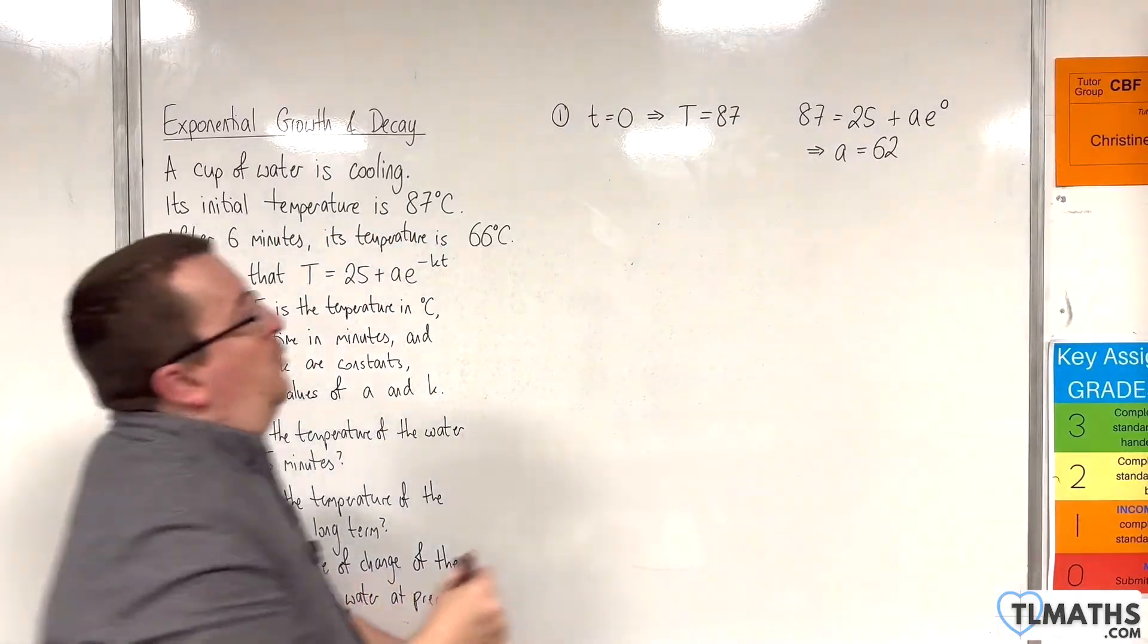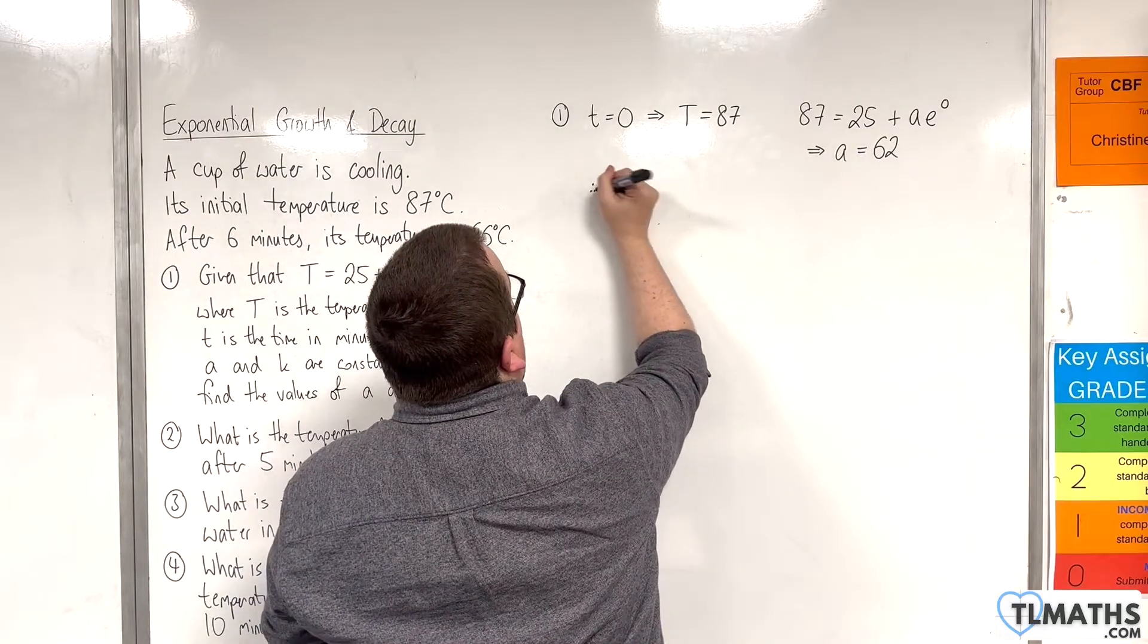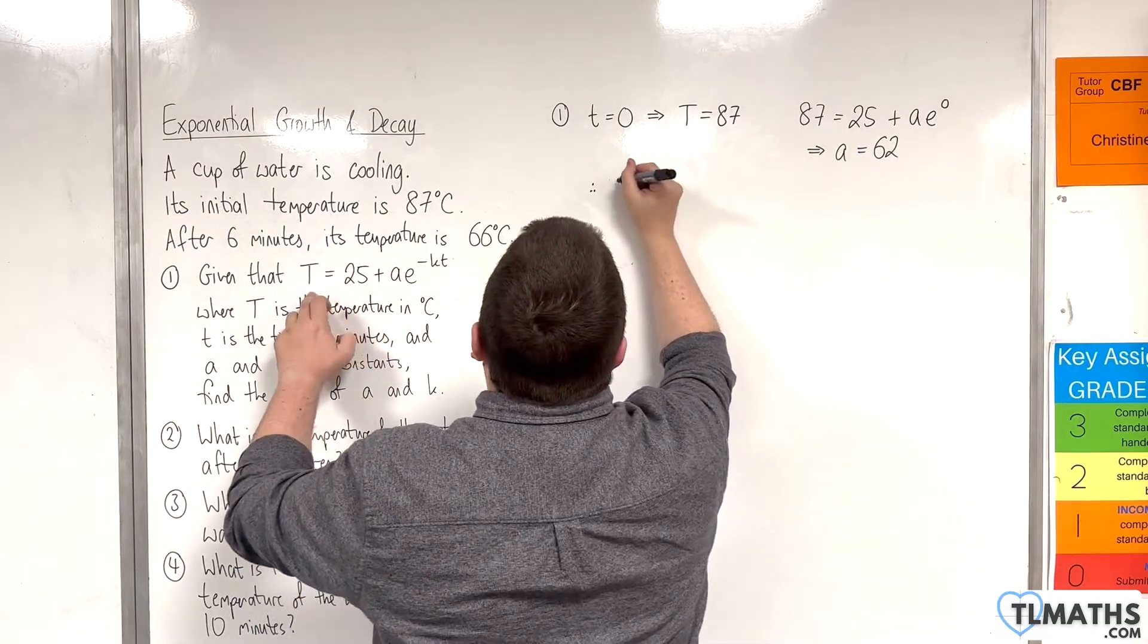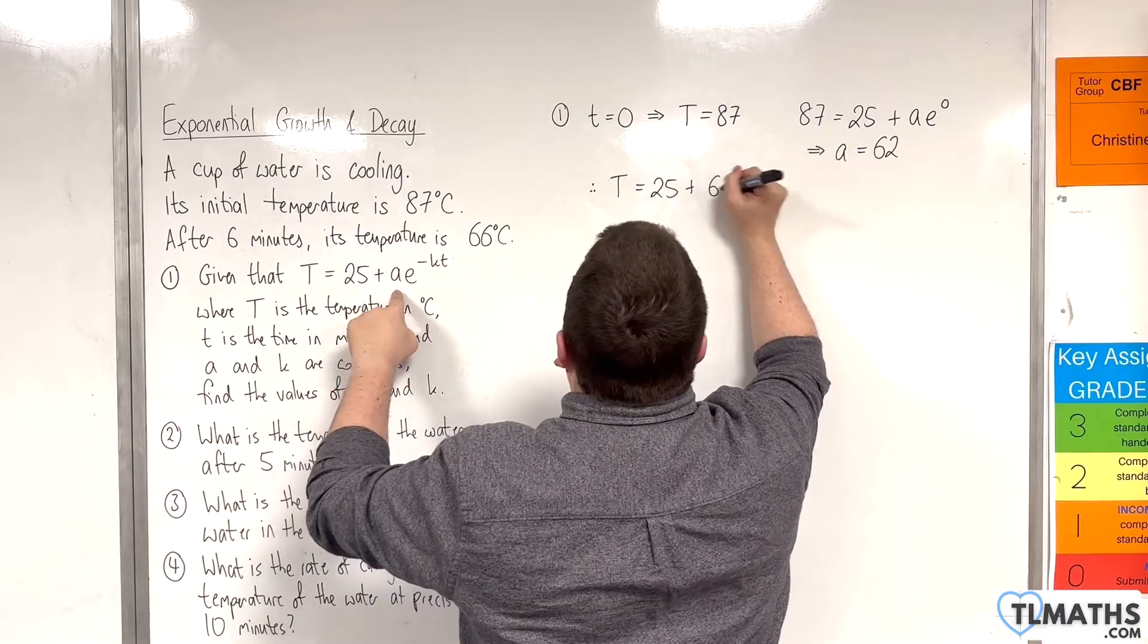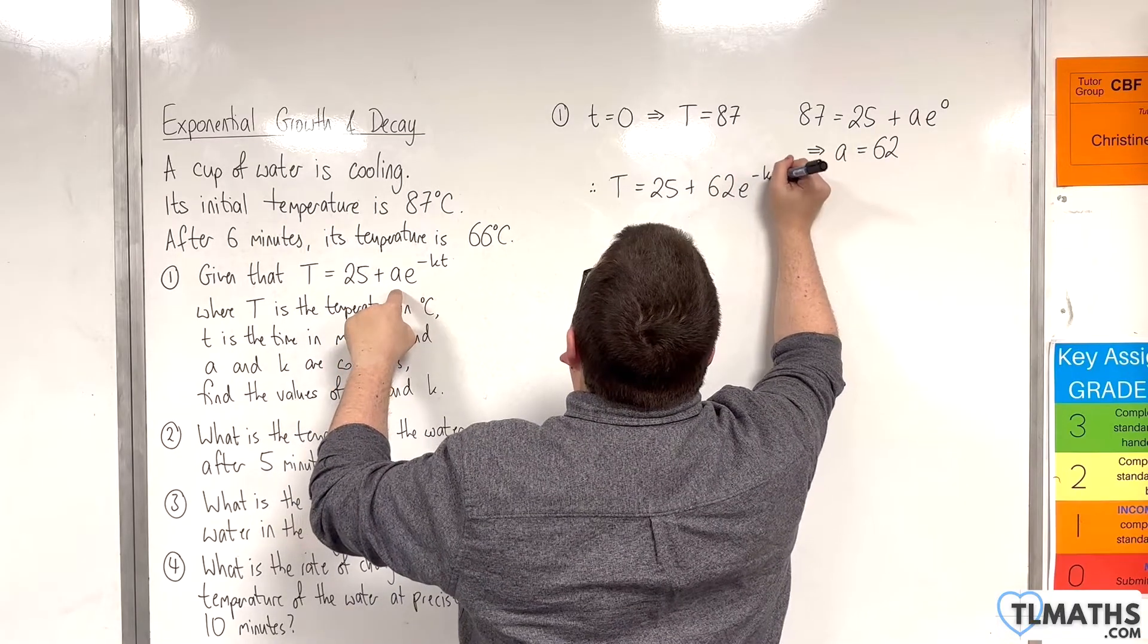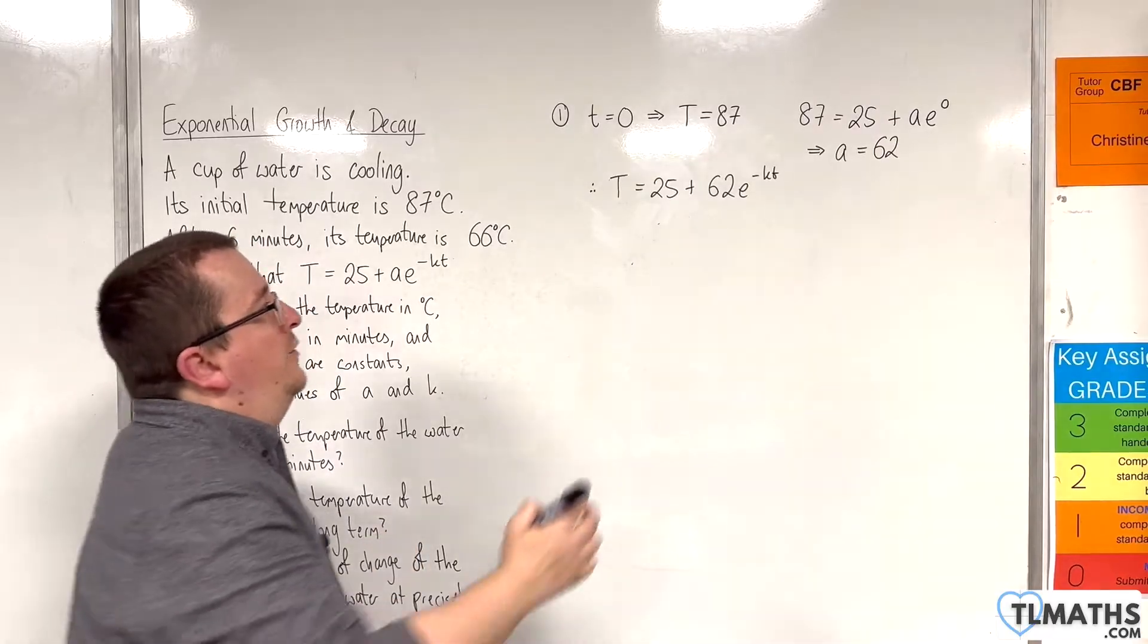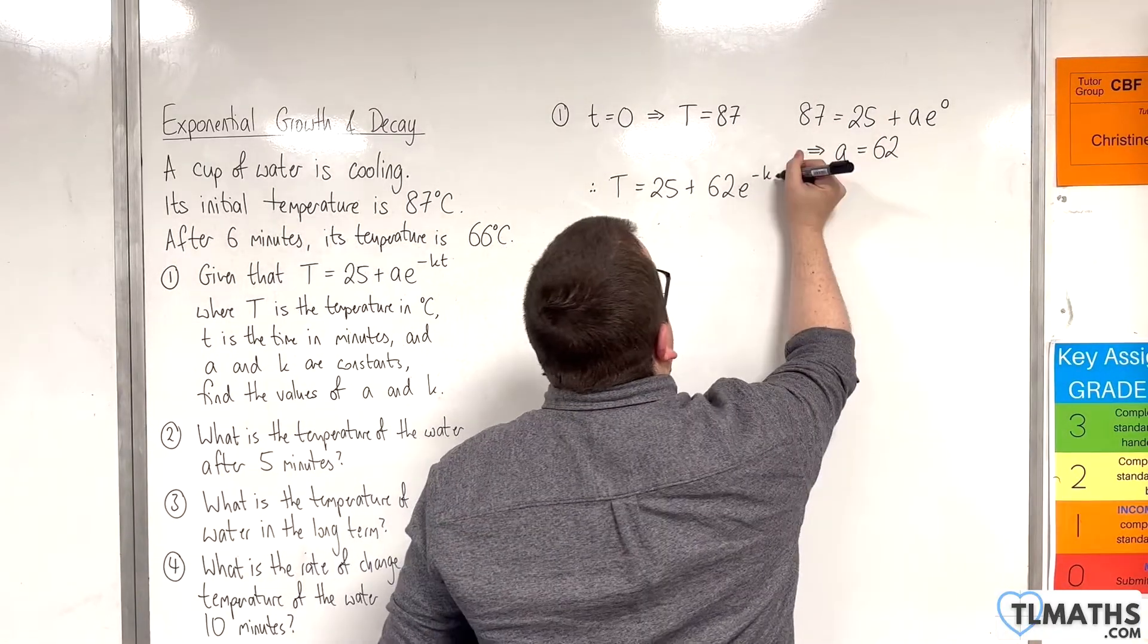So therefore, we now have that capital T is 25 plus 62 E to the minus KT. OK, so we've now got A.